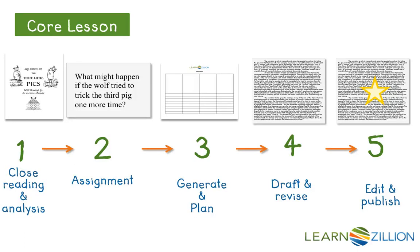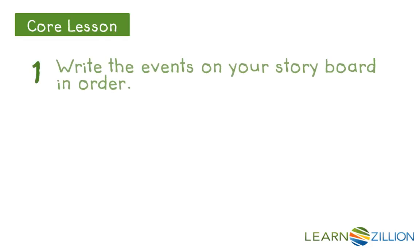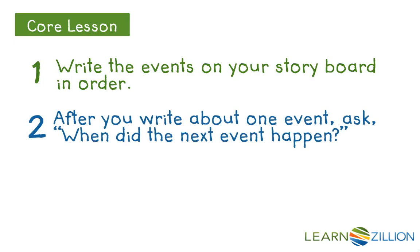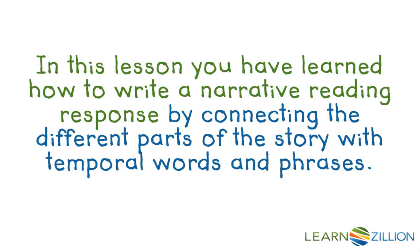You are done drafting your story. In the next several lessons, we will revise our stories to make them even better. We followed three steps to write the first draft of our narrative reading response. First, we wrote the events on our storyboard in order. Second, after we wrote about one event, we asked, when did the next event happen? Third, we used temporal words and phrases to connect each event. In this lesson, you have learned how to write a narrative reading response by connecting the different parts of the story with temporal words and phrases.